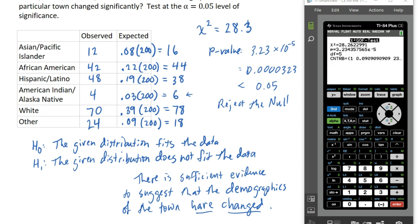According to our test, something has changed, and we should update the demographics of the population of this town. The given distribution from 2001 no longer fits. That's what a goodness of fit test looks like.